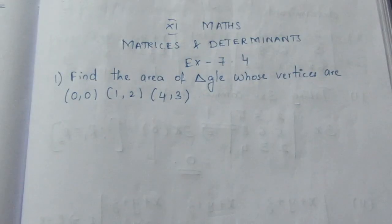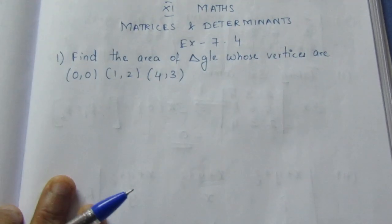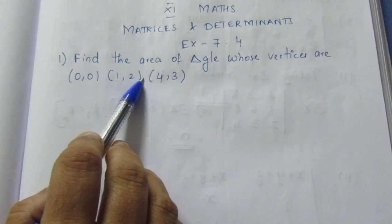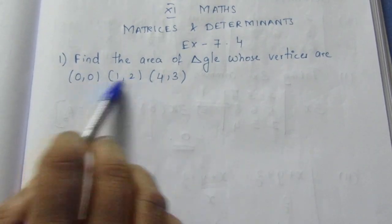To find the area of a triangle when given the vertices, we will use the formula for the area of a triangle.